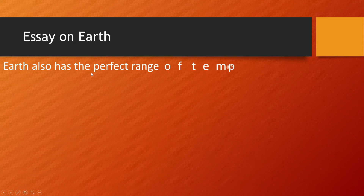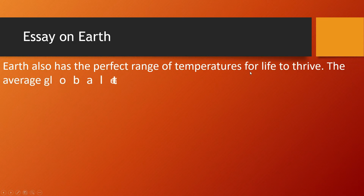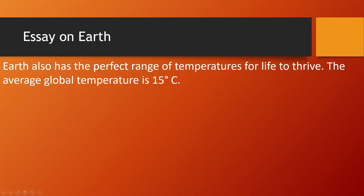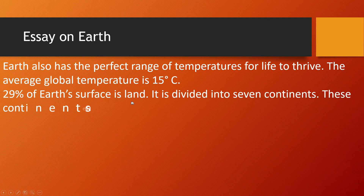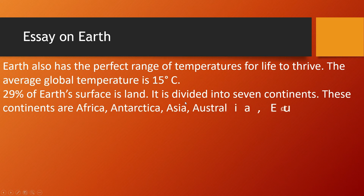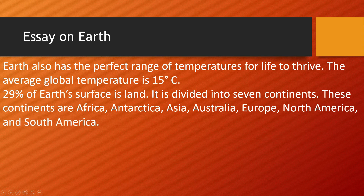Earth also has the perfect range of temperatures for life to thrive. The average global temperature is 15 degrees Celsius. 29% of Earth's surface is land, and it is divided into seven continents.